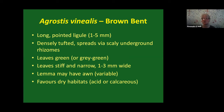Agrostis vinialis — brown bent — also has a long pointed ligule. There's quite a bit of confusion between these two species as they look similar. Agrostis vinialis tends to grow in dense tufts, more dense than Agrostis canina, and spreads via underground rhizomes. The leaves are green or grey-green, but unlike Agrostis canina, they are stiff and narrow — one to three millimetres wide, sometimes quite bristle-like. The lemma can have an awn or not, varying even on the same individual. Unlike Agrostis canina, it favours dry habitats — both acid and calcareous.